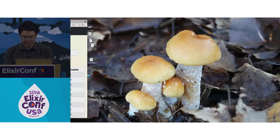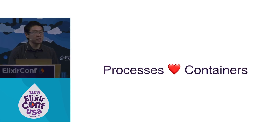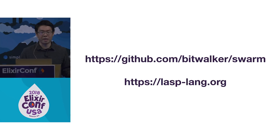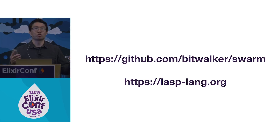So what have we learned from this exercise? Apart from how fun live demos are, we've seen that long-running processes can coexist with containers in a cloud environment. We simply used tools to help us migrate processes when those containers went down. The way we did this is not the only way — I used Horde, and the CRDT library written by the same author. There are other libraries: Swarm, which lets you perform process migration; LASP, a collection of libraries including distributed registries and CRDTs. There are a number of tools coming up in our community, and more on the way.